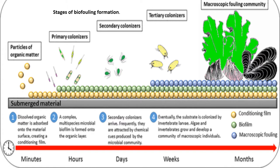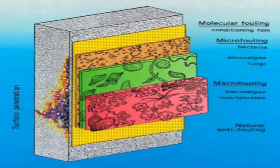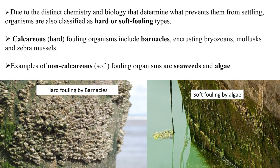Conditioning film, biofilm, and macroscopic fouling come to the surface in stages. First is molecular fouling, in which conditioning films are formed. Later, micro fouling occurs where bacteria, microalgae, and fungi accumulate. Then macro fouling is produced, in which macroalgae and invertebrates attach. Due to distinct chemistry and biology that determines what prevents them from settling, organisms are also called hard or soft fouling types. Calcareous or hard fouling organisms include barnacles, encrusting bryozoans, molluscs, and zebra mussels.